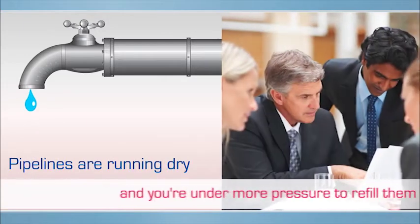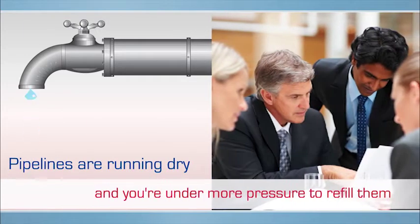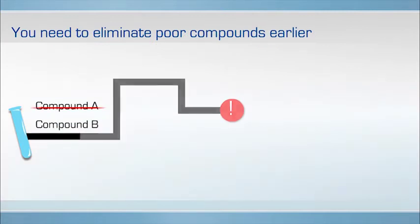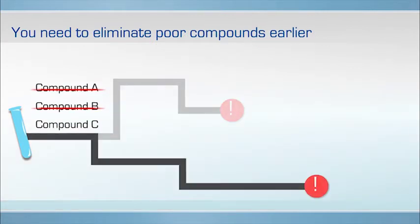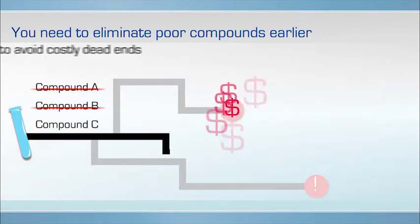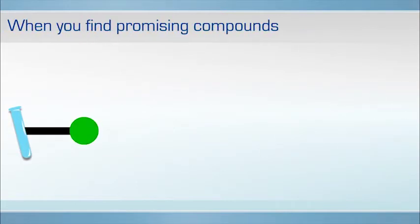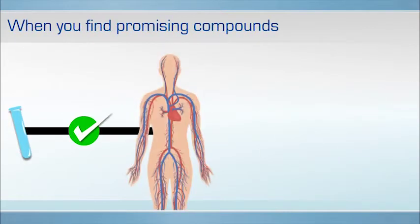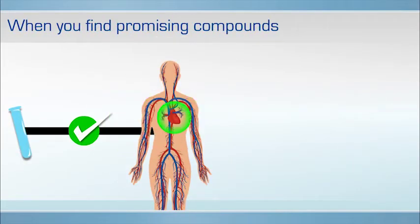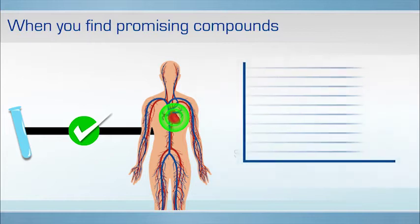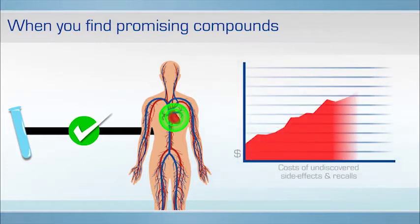Pipelines are running dry and you're under more pressure to refill them, which means you have to eliminate poor compounds earlier to avoid costly dead ends. When you find promising compounds, you have to figure out how to deliver them to the target at the right concentrations to provide the desired therapeutic effect, or in some cases avoid unacceptable adverse reactions.